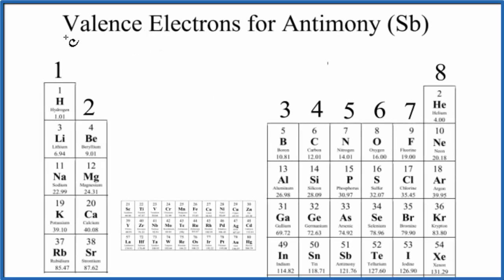There are two main ways to find the number of valence electrons for antimony, element symbol Sb. The first is to look at the periodic table and look at the group number to figure out the valence electrons.